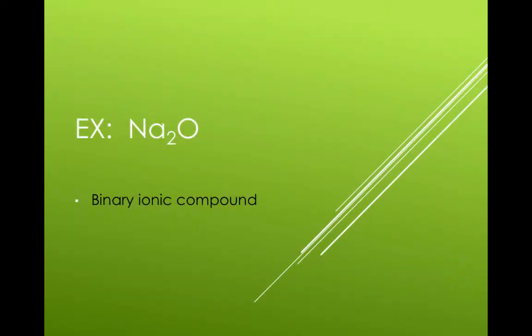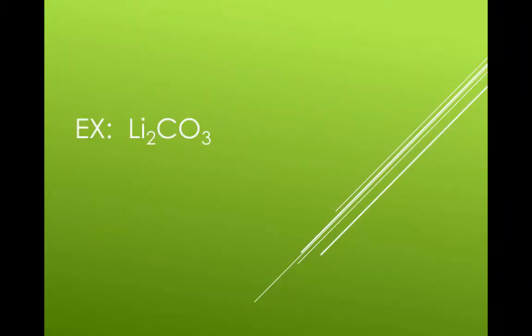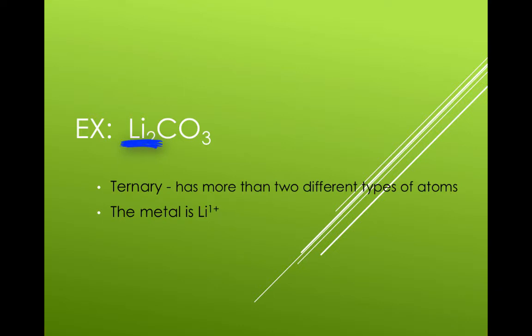Na2O is a binary ionic compound. It is comprised of only two types of elements, the sodium metal and the oxygen nonmetal. Li2CO3 is not binary. It is ternary. It has more than two types of atoms in it. There is a metal lithium with a charge of plus 1, and there is CO3, which is a negative 2 charged ion that is composed of two types of atoms, carbon and oxygen.